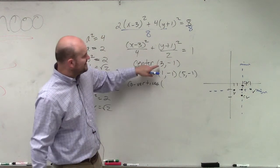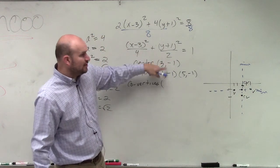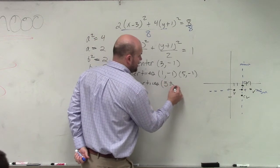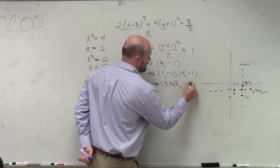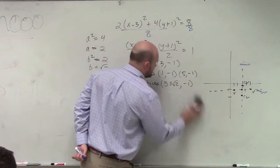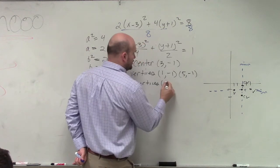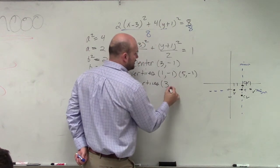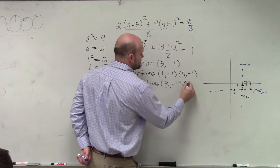Now, again, if my center is at 3, negative 1, and I'm going up or down, I'm really just doing 3 plus or minus the square root of 2, comma negative. Oops, I'm sorry. That's the other way. You're going over 3, and then you're going negative 1 plus or minus the square root of 2.